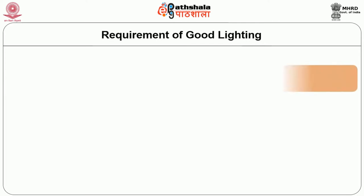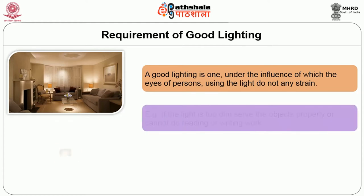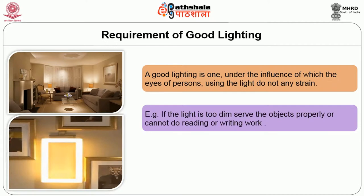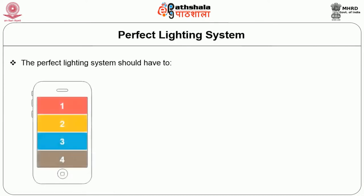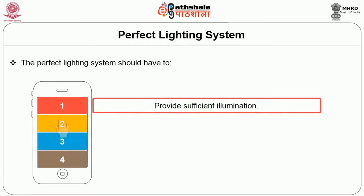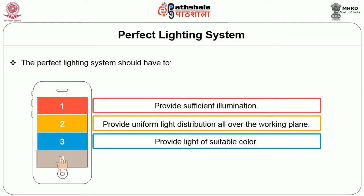Requirements of good lighting: a good lighting system is one under which the eyes of the person using the light do not experience any strain. If the light is too dim, one cannot see objects properly or do reading or fine work. On the other hand, if the light is too bright, the eyes start watering. The perfect lighting system should provide sufficient illumination, uniform light distribution over the working plane, light of suitable color, and should avoid glare and shadows.